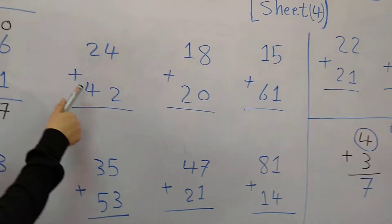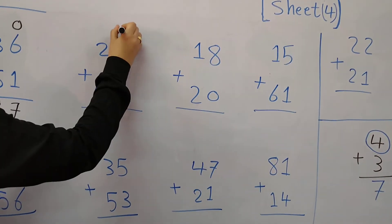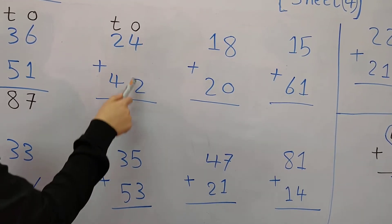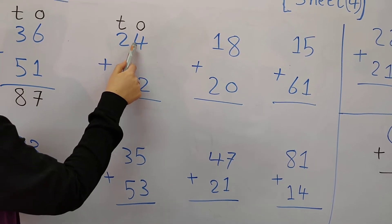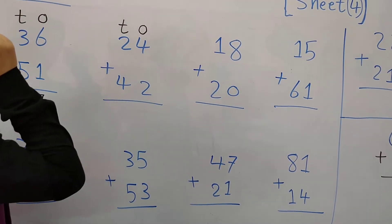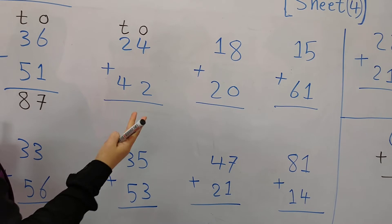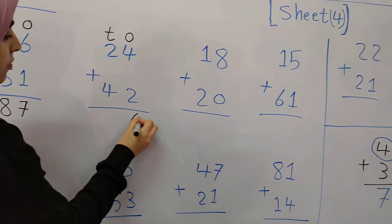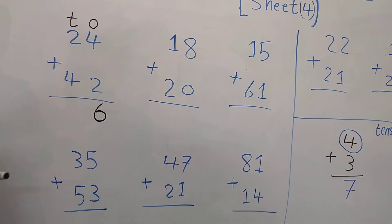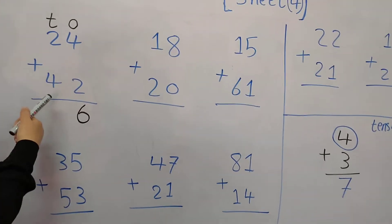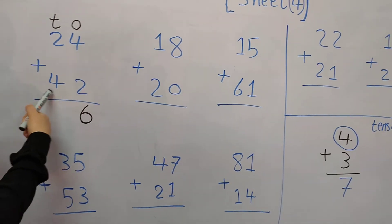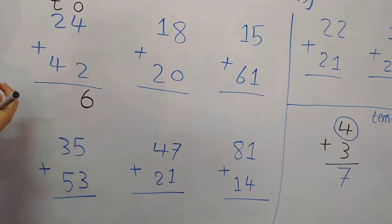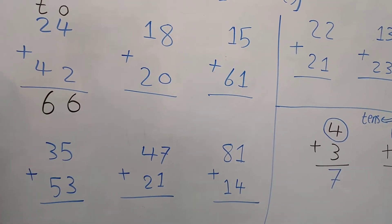24 plus 42. The first thing: write O and T. We have 4 plus 2. Where is the greatest number? 4. I put 4 in my mind and 2 on my fingers and count after 4. After 4: 5, 6. In the 10's column: 2 plus 4. Where is the greatest number? 4. I put 4 in my mind and 2 on my fingers and count after 4. After 4: 5, 6. So the answer is 66.